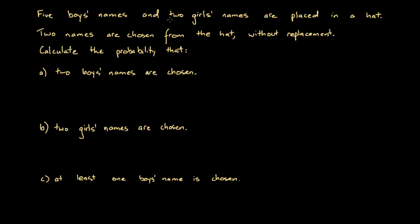Five boys' names and two girls' names are placed in a hat. Two names are chosen from the hat without replacement, and we're going to assume those names are chosen at random from the hat.